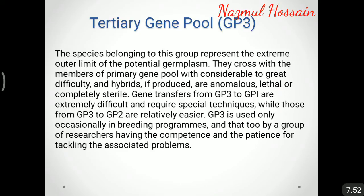The tertiary gene pool species represent the extreme outer limit of the potential germplasm. They cross with members of the primary gene pool with considerable to great difficulty, and hybrids produced are anomalous, lethal, or completely sterile. Gene transfers from the tertiary gene pool to the primary or secondary gene pool are extremely difficult and require special techniques, while transfers from the tertiary to secondary gene pool are relatively easier. The tertiary gene pool is used only occasionally in breeding programs, and only by researchers having the competence and patience for tackling the problems involved.